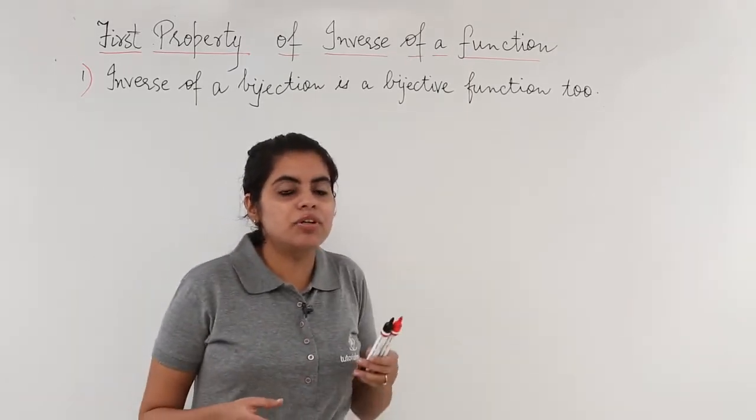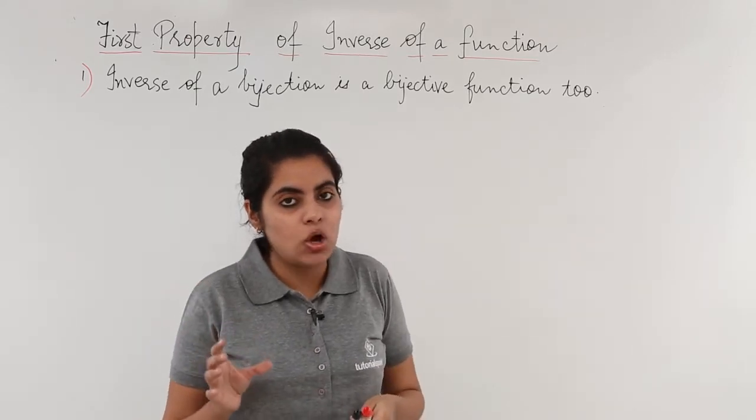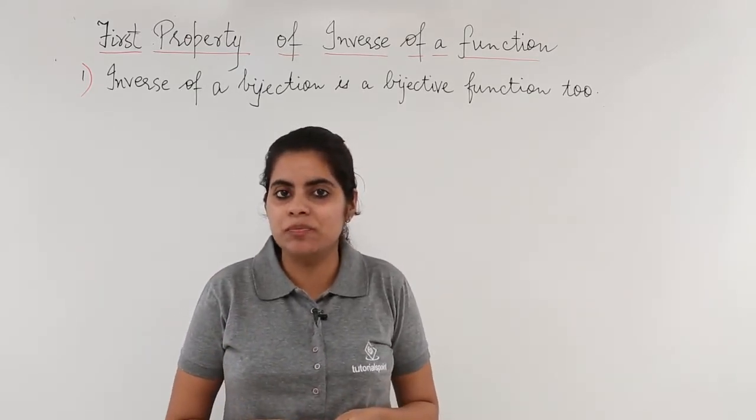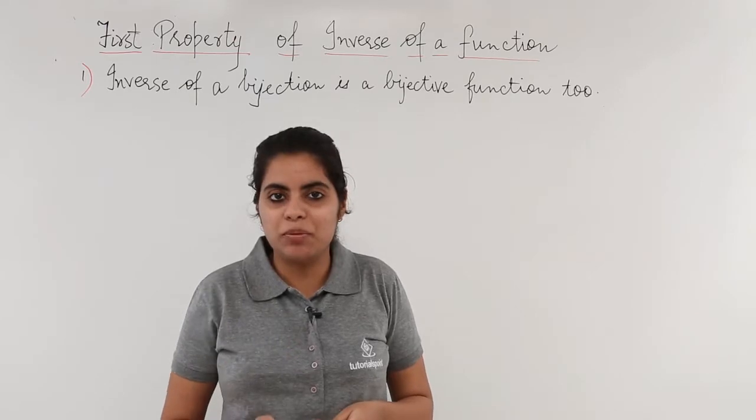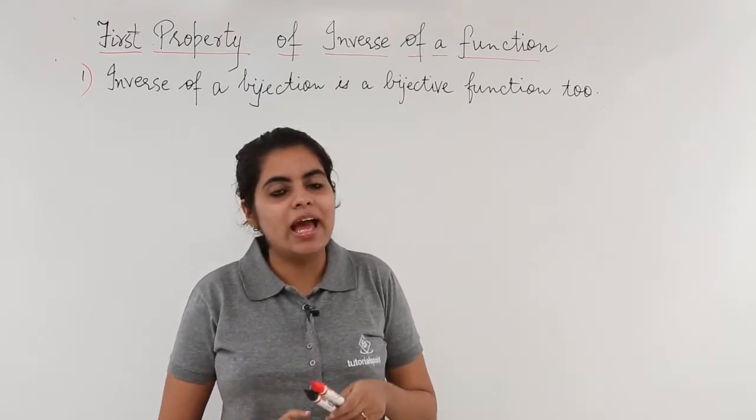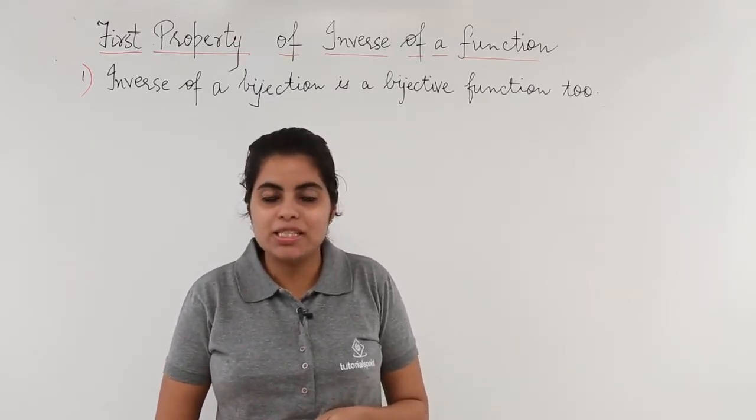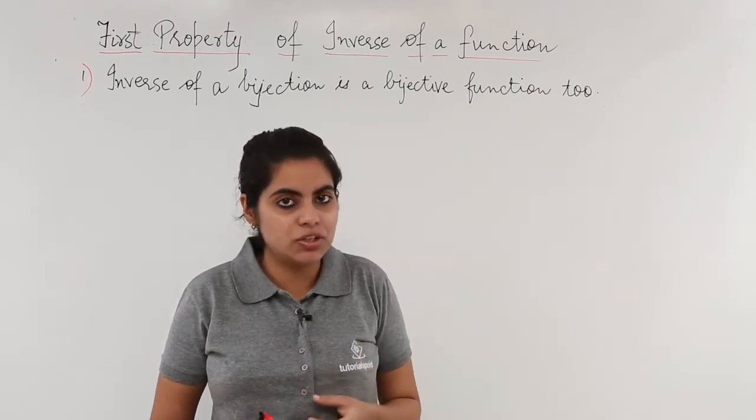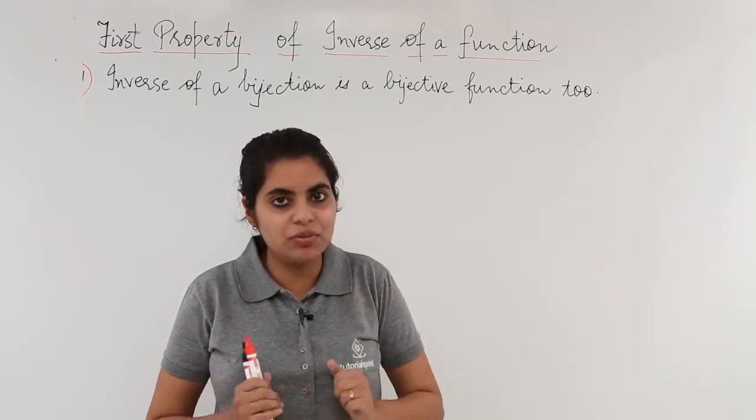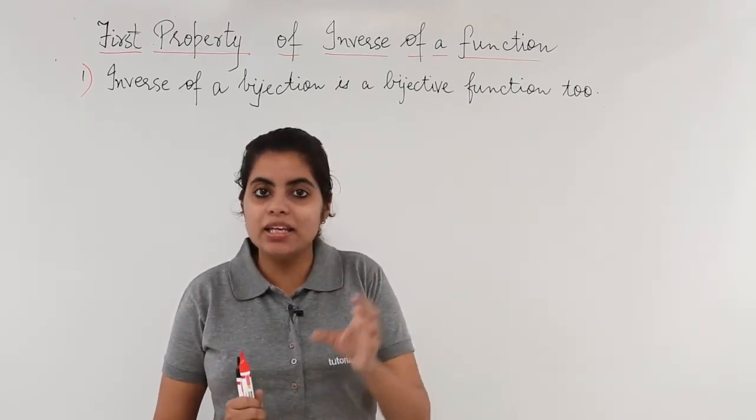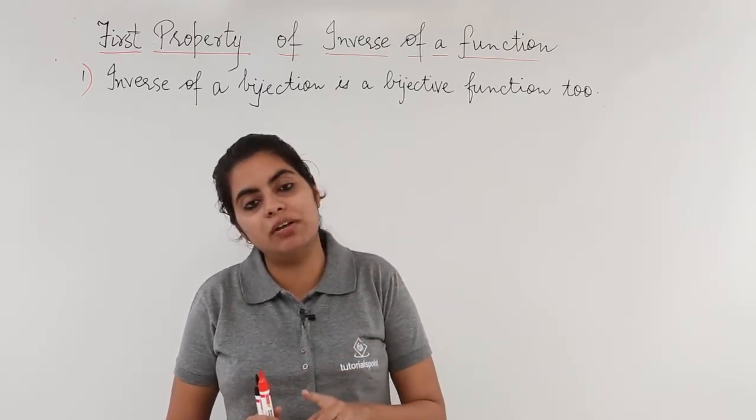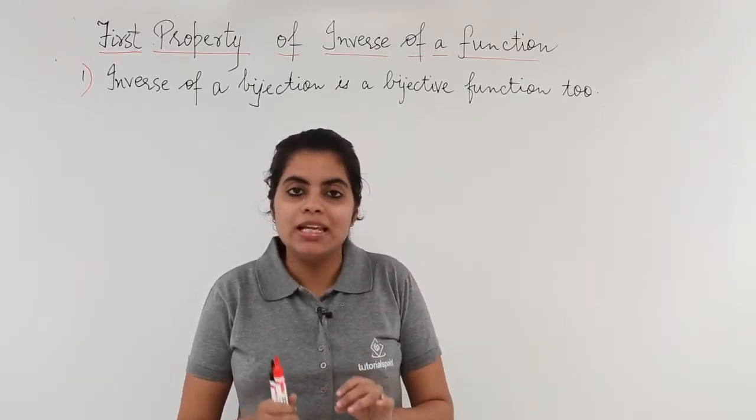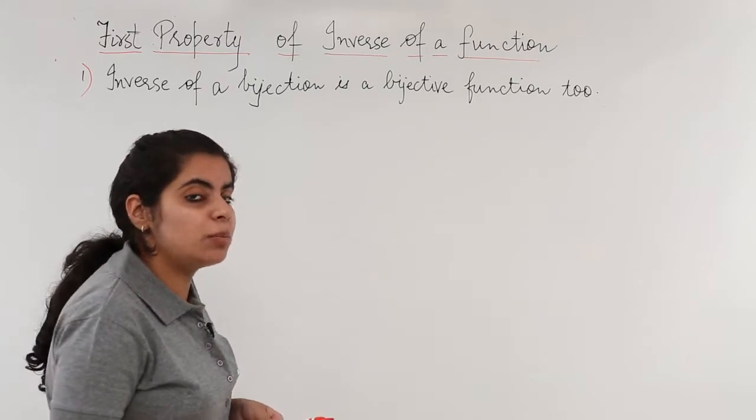Let's understand this first by reminding ourselves what is a bijective function. A bijective function is one which is both one-one and onto. That means if you have a one-one onto function, you take its inverse, you get again a function which is both one-one and onto. Let's study this with the help of an example.